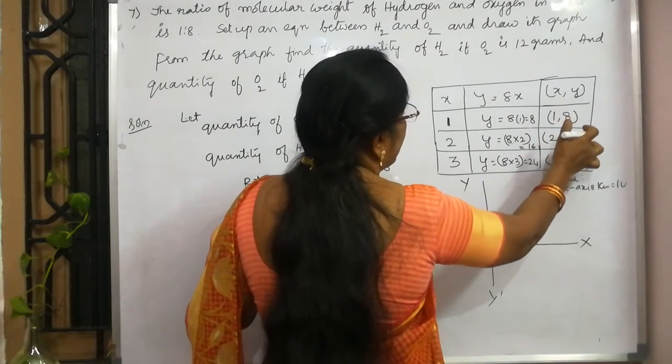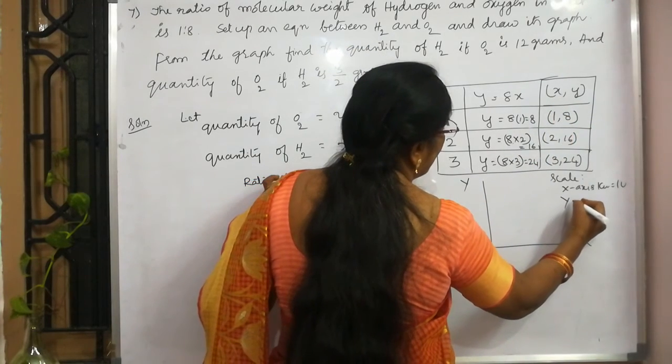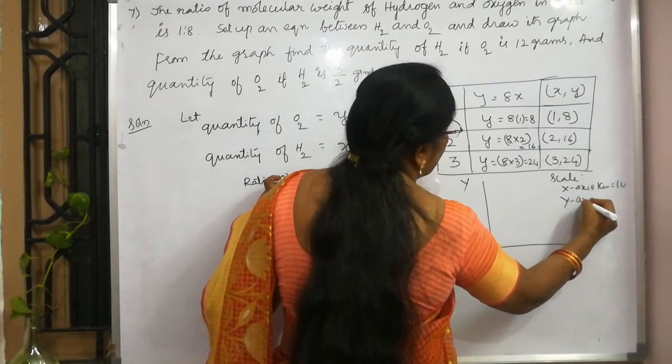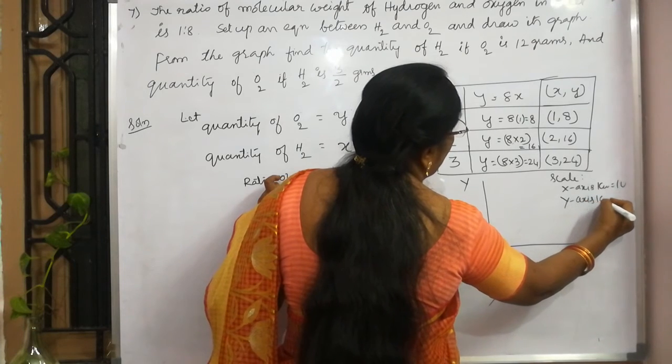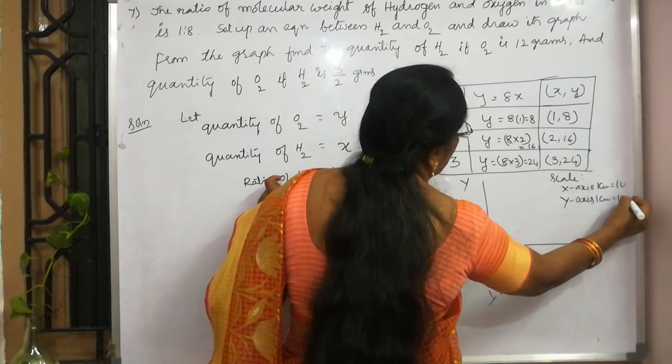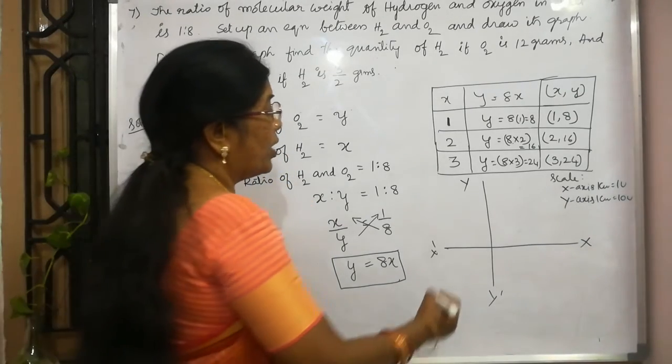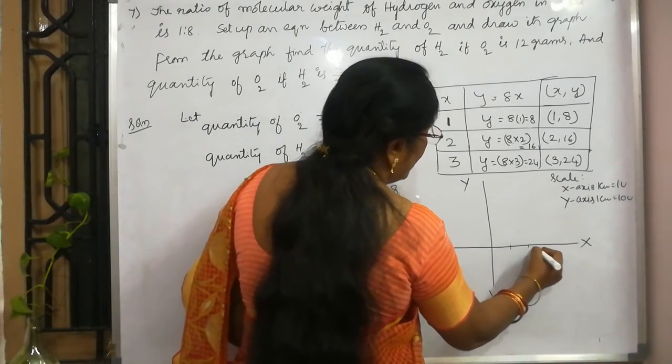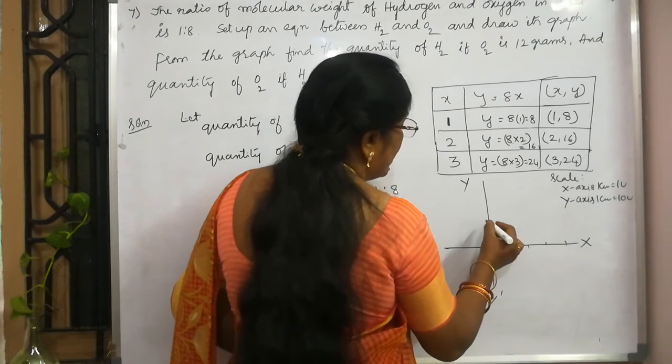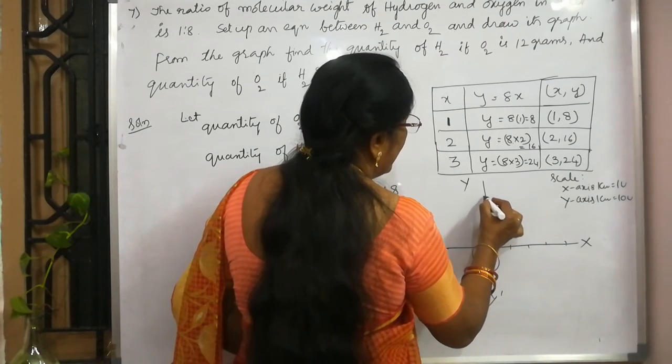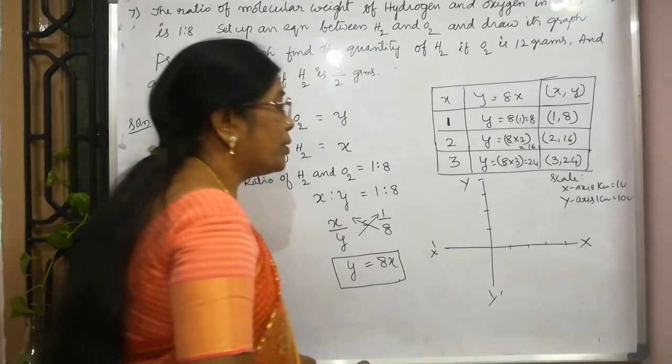If you observe this, 8, 16, 24. So, this you can take on y axis. 1 centimeter is equal to 10 units. Now, you can draw the graph. You have to take this as 1, 2, 3, 4. Like this. And you can take 10, 20, 30, 40. And you can draw the graph.